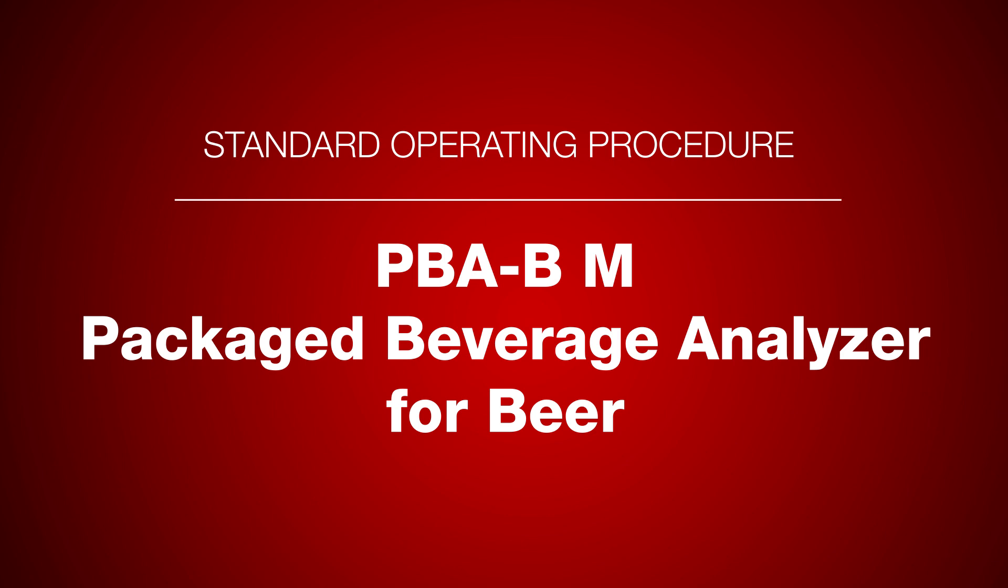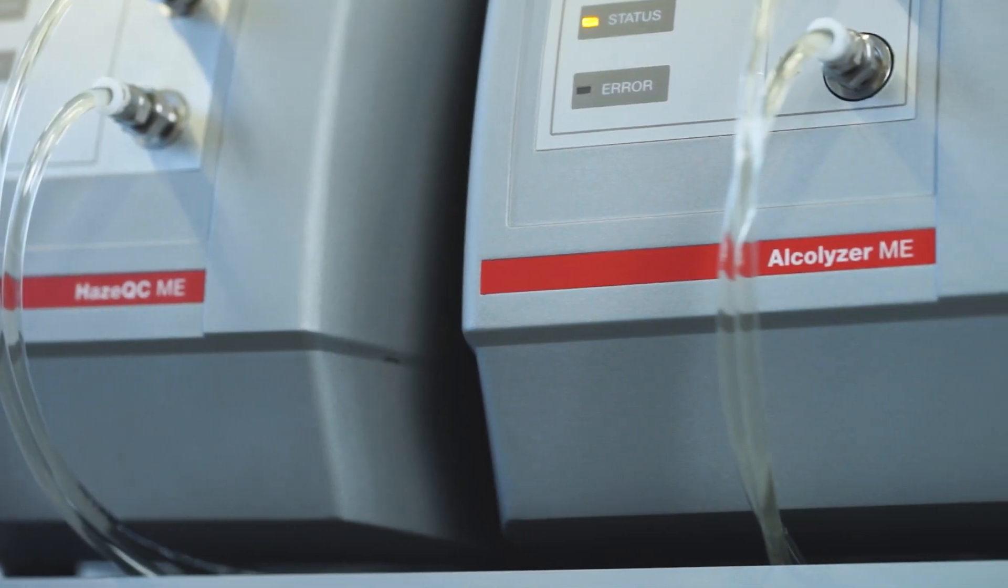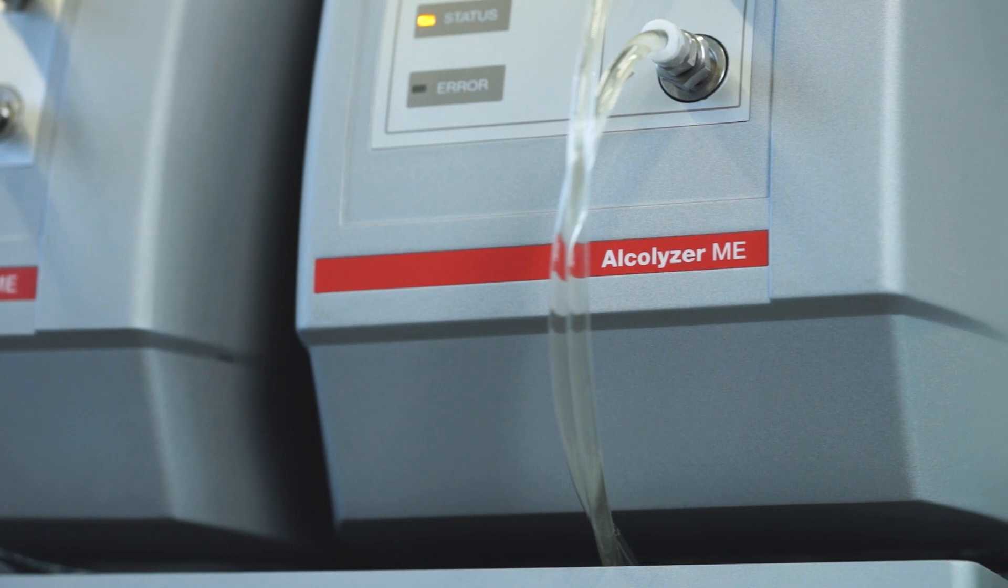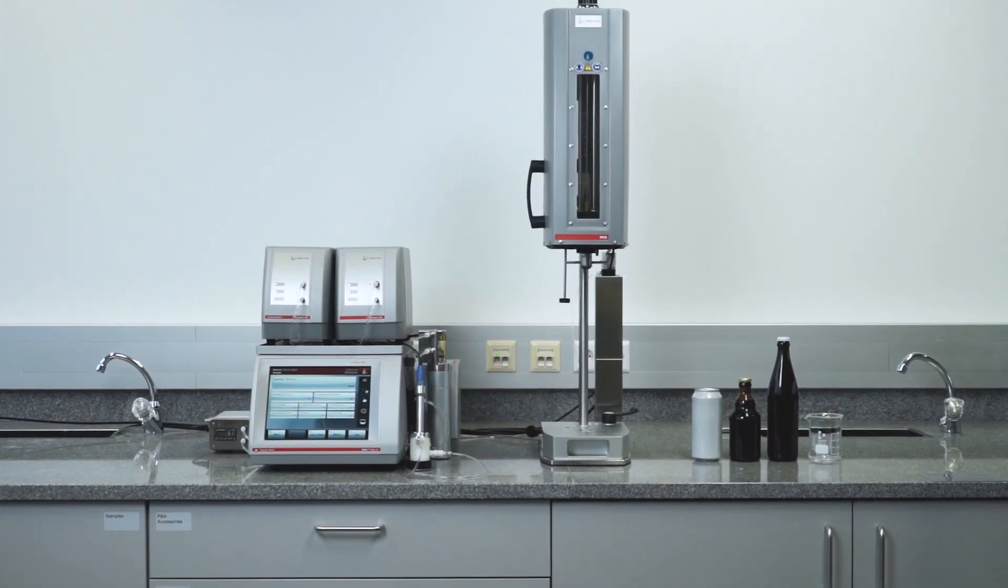The PBA-B system is the ideal solution for the final quality control of bottled beverages directly out of glass bottles or cans. All measured parameters are determined simultaneously without prior sample preparation.